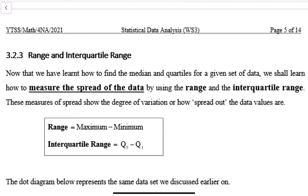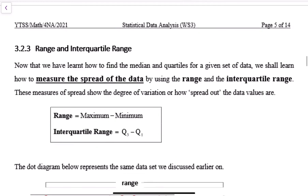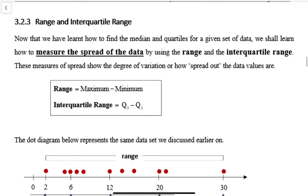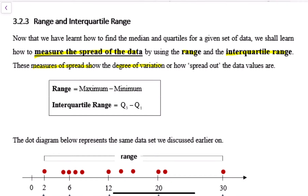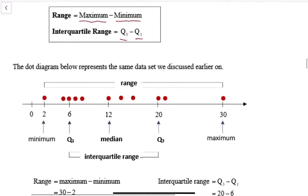That's the definition of quartiles. Next we look at the definition of range and interquartile range. Now that we know how to find the median and quartiles, we need to learn how to measure the spread of the data. To measure the spread we can use either the range or the interquartile range — these measures show us the degree of variation of how spread out the data values are. Range is maximum minus minimum; interquartile range is Q3 minus Q1.